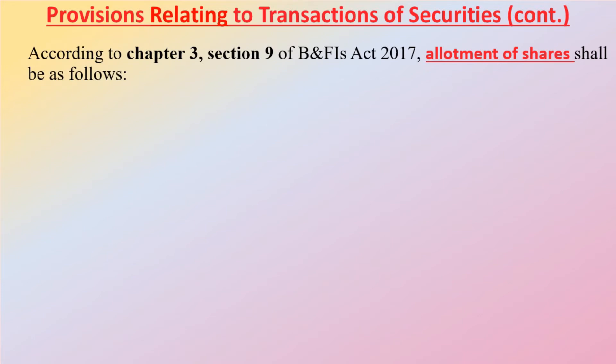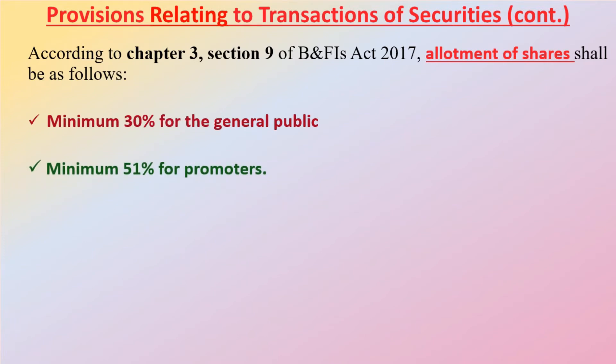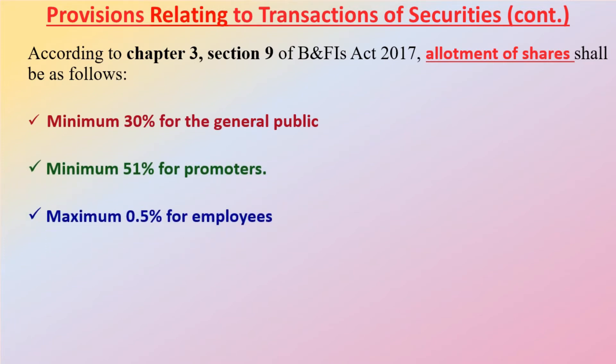According to Chapter 3, Section 9 of the Bank and Financial Institution Act 2017, allotment of shares shall be as follows: the bank and financial institution should set aside a minimum of 30 percent for the general public, a minimum of 51 percent for promoters, and a maximum of 0.5 percent for employees.